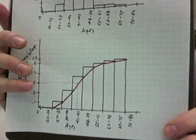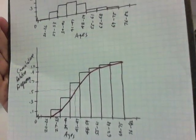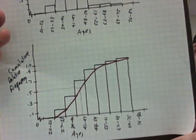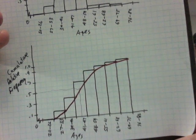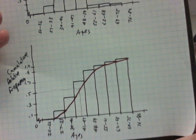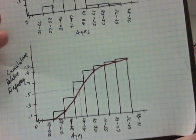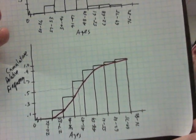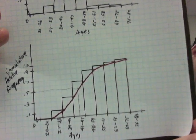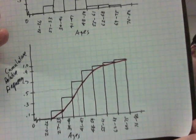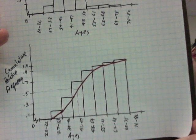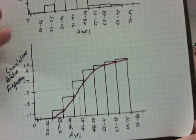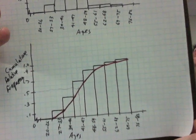As far as the cumulative relative frequency histogram, those would be the bars that you see. And that's just using the information from the last column of the table. And you can see I superimposed that red jagged line that goes through the corners of each of the steps along the way of that graph. And that red line, that jagged red line is called the ogive.